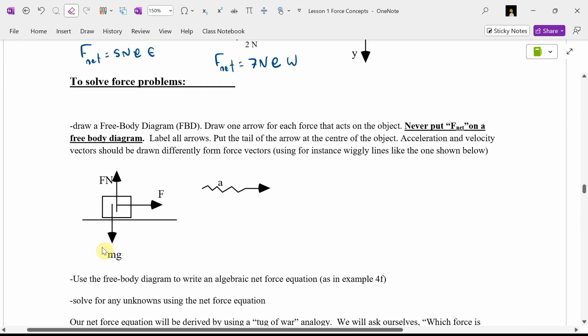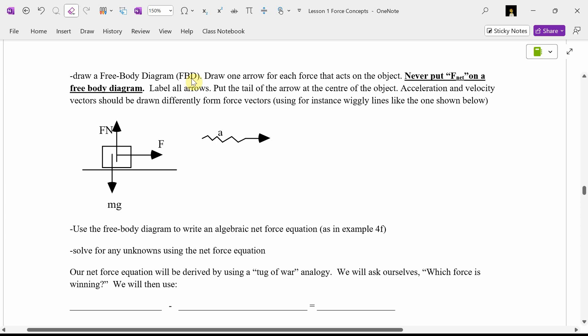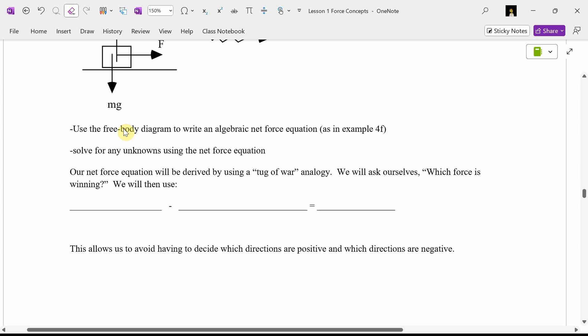How do we solve force problems? We draw a free-body diagram or an FBD. You draw one arrow for each force that acts on an object. You draw the arrows roughly to scale. In other words, if you know one force is bigger, make that arrow bigger. If you know one force is smaller, make that arrow smaller. F net never shows up on the free-body diagram because it's the vector sum of all the forces on your free-body diagram. Put the tail of the arrow at the center of the object. If you can, sometimes if it's cluttered, you might need to move the tail a little bit over.